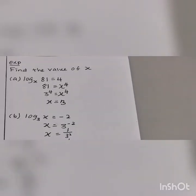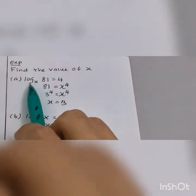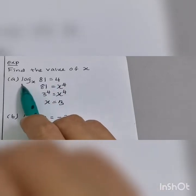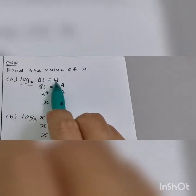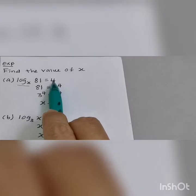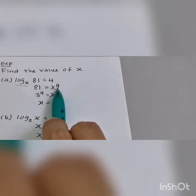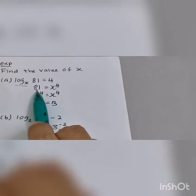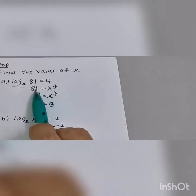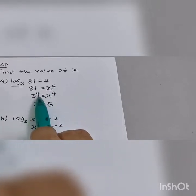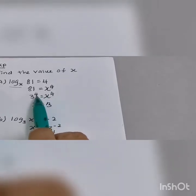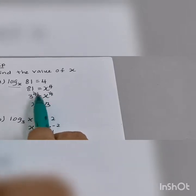If the question asks you to find the value of x and they give you log base x of 81 equals 4 — this log you can move to the right-hand side, so the base will become the number of the right-hand side, and this 4 will become the power: x to the power 4 equals 81. What number to the power 4 becomes 81? It's 3. So x equals 3.